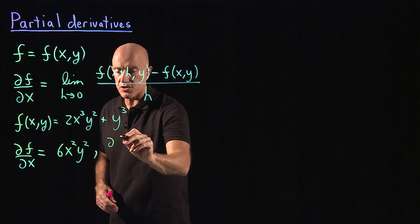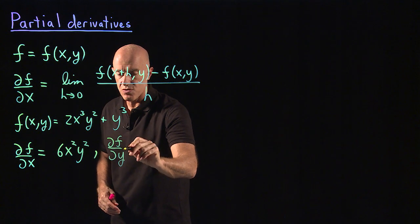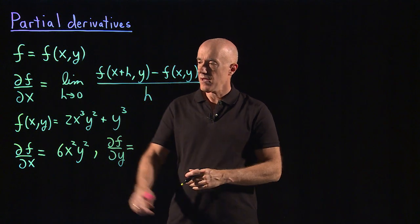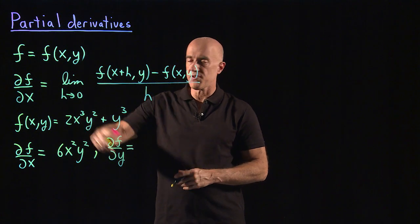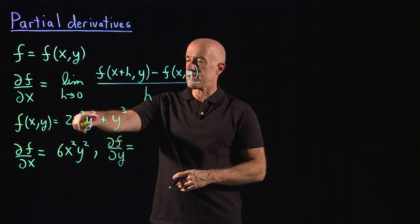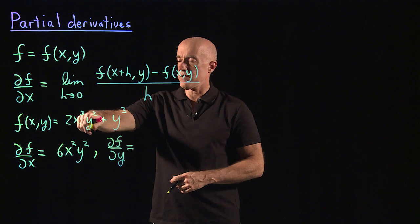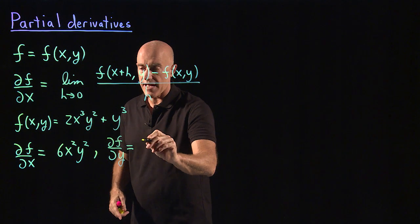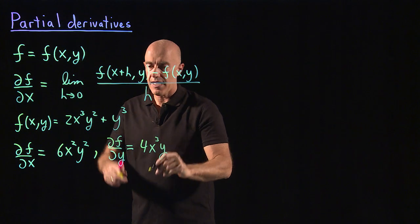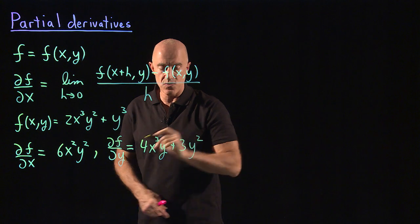Now, what is the partial derivative of f with respect to y, the second variable? We differentiate f with respect to y, keeping x fixed. So x is like a constant. The y² becomes 2y, so we have 4x³y, and the y³ becomes 3y².